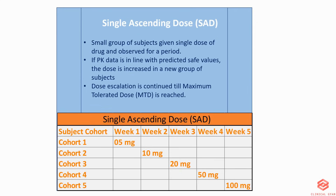In Single Ascending Dose studies, a small group of subjects are given a single dose of a drug and observed for a period. If the pharmacokinetic data is in line with predicted safe values, the dose is increased in a new group of subjects. Dose escalation is continued until the maximum tolerated dose is reached or defined. As you can see here, each subject cohort receives a single dose. For example, if cohort 1 receives 5 milligrams and shows no significant issues, the dose is increased for the next cohort to 10 milligrams, and the increment continues until the maximum tolerated dose is reached.